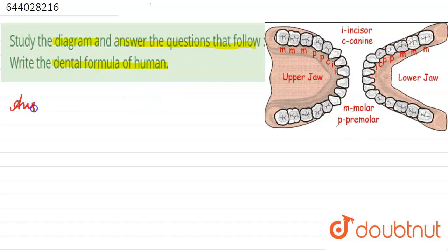The dental formula represents the arrangement of teeth in each half of the upper and the lower jaw. The entire formula is multiplied by 2 to represent the total number of teeth.